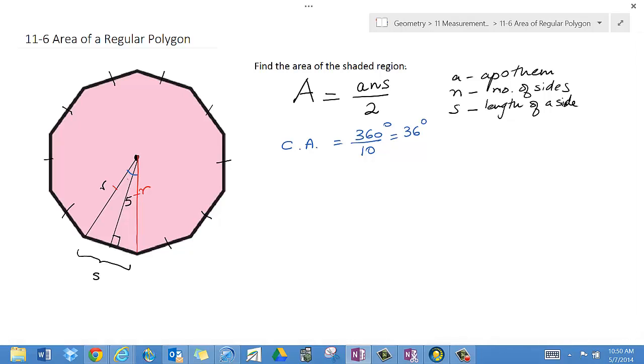If that's 36, that means this angle over here will be half of 36. This is 18 degrees. Remember, these two little triangles are congruent to each other.